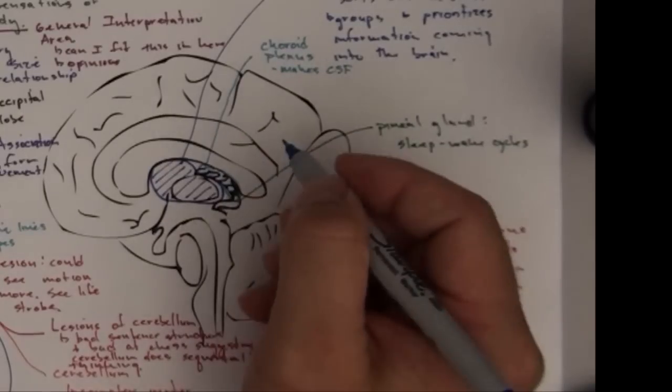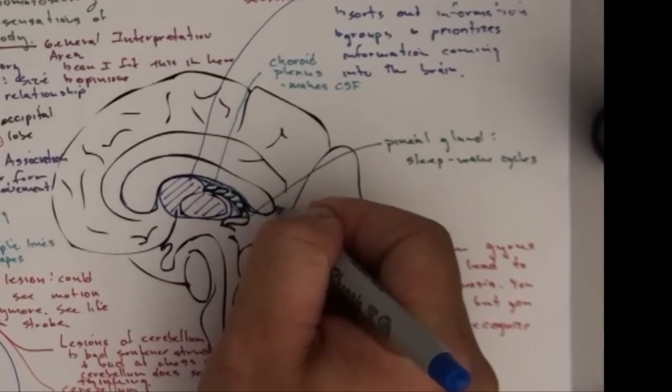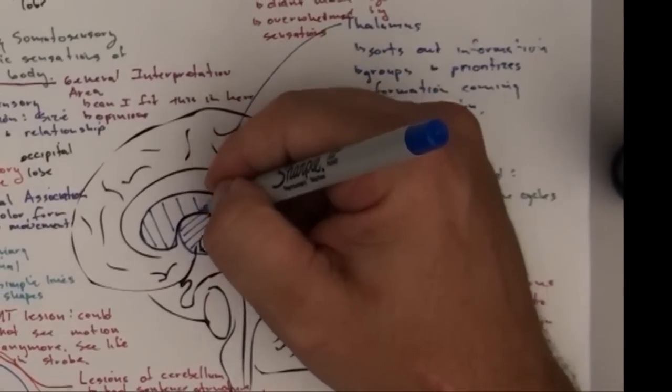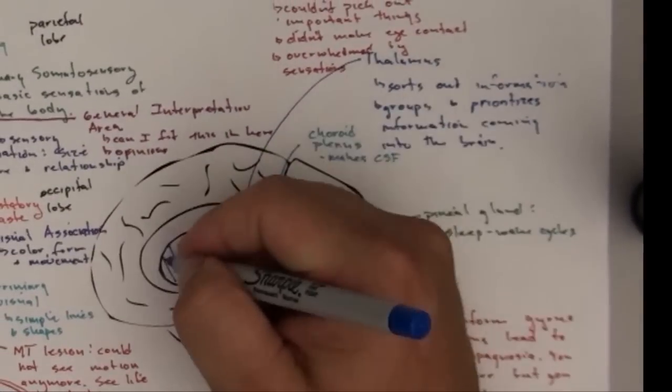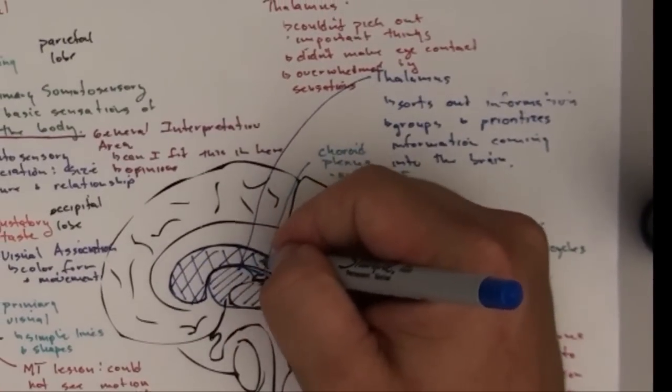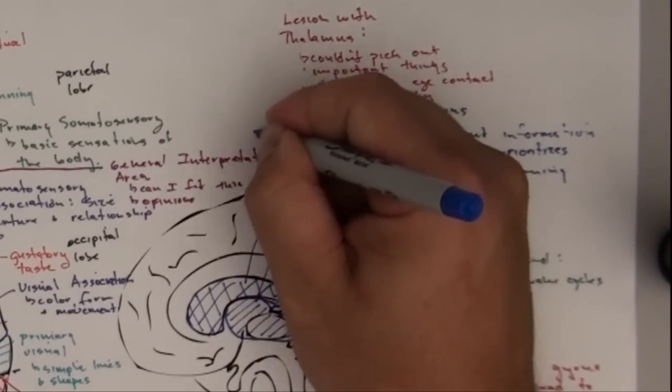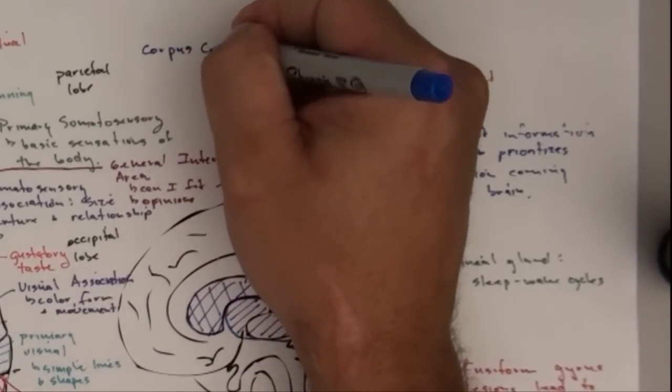This guy here is called the corpus callosum. Kind of picked a bad color there, didn't I? It's right next to the other one. This is the corpus callosum.